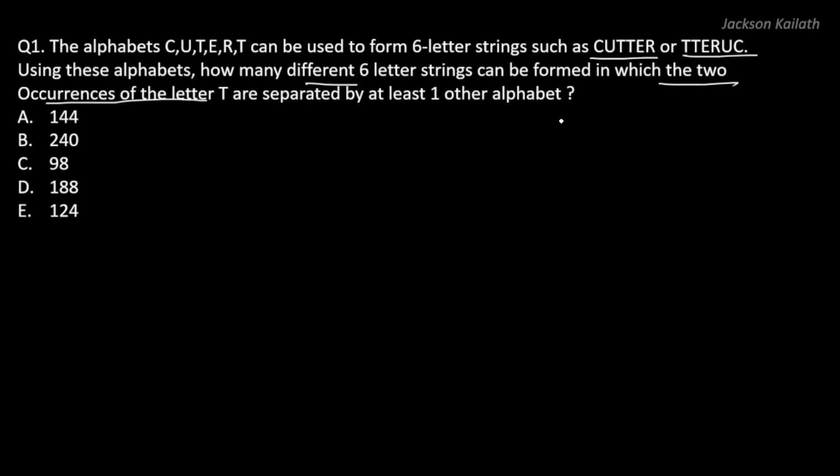We're back. I hope you've given it a try. Now let's try to do this together. The best way to solve these types of questions is to find all the different arrangements that can be formed minus the violations of the given condition. The given condition is that the two occurrences of the letter T should not be together or they should be separated by at least one other alphabet.